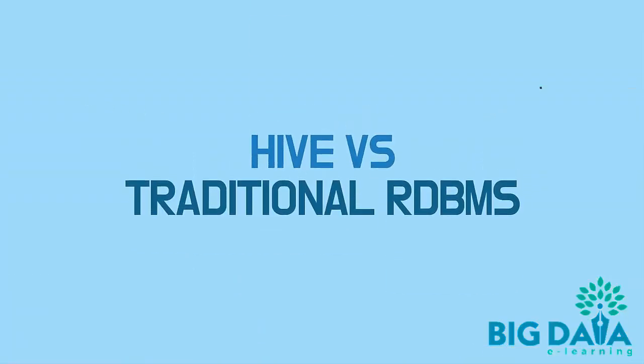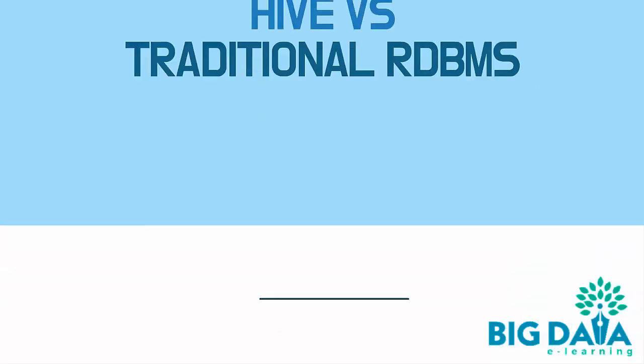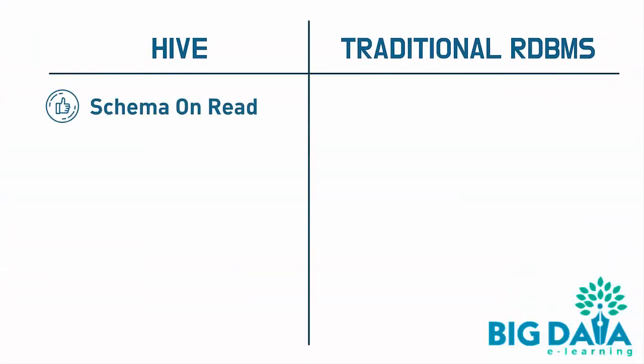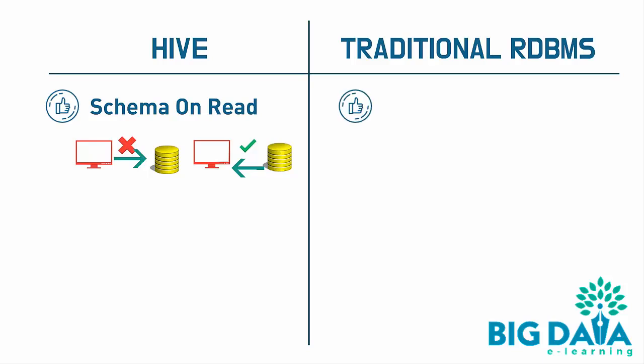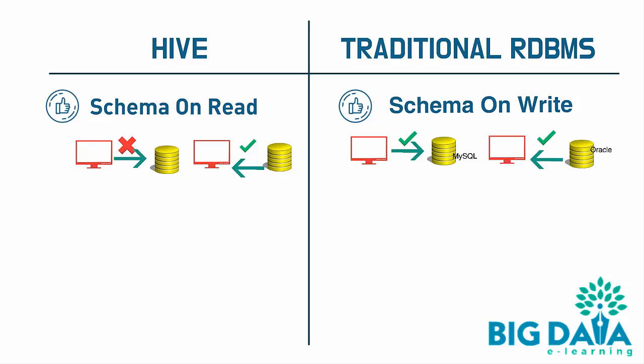Hive vs. traditional RDBMS: Hive enforces schema on read. Schema on read allows the component to insert data without checking for the type or schema definition of the table — it verifies the data only when data is read from the table. Traditional RDBMS enforce schema on write, which includes verifying if the data is inserted as per the table and schema definition during the write phase itself. This is how RDBMS databases like MySQL or Oracle work.